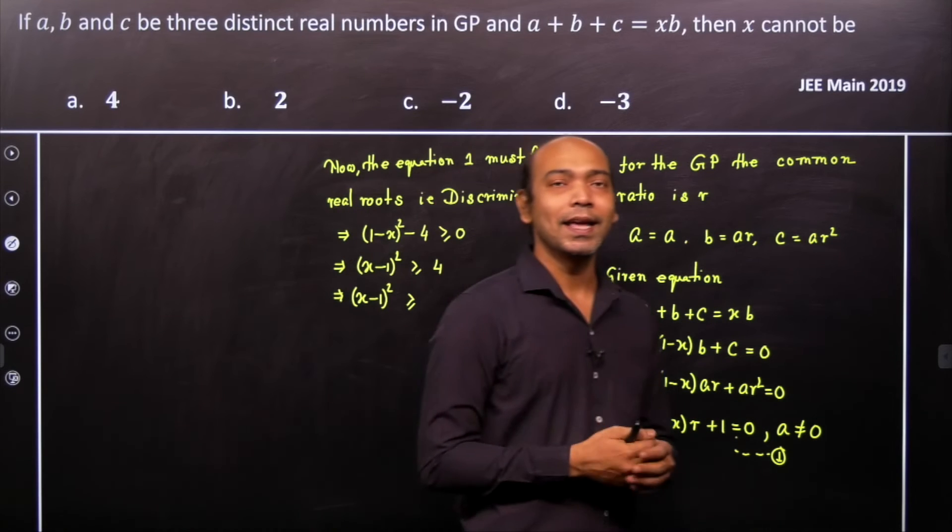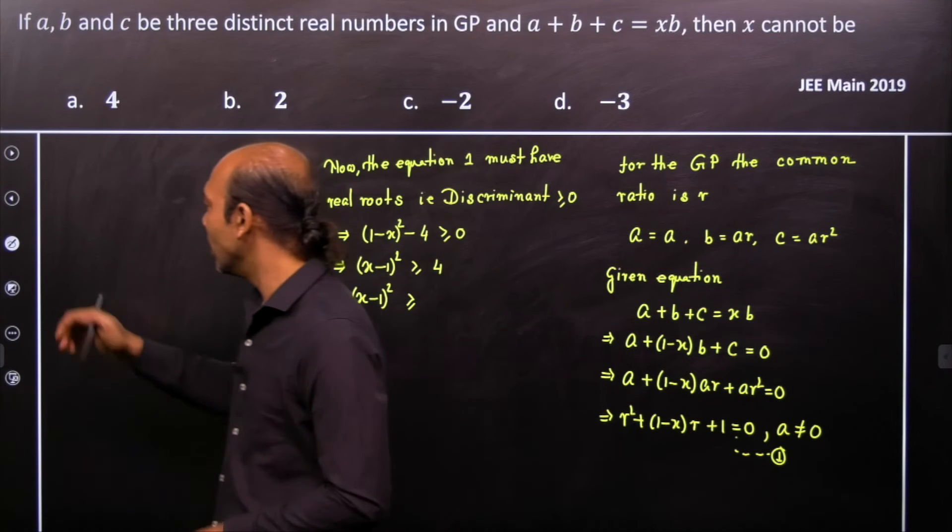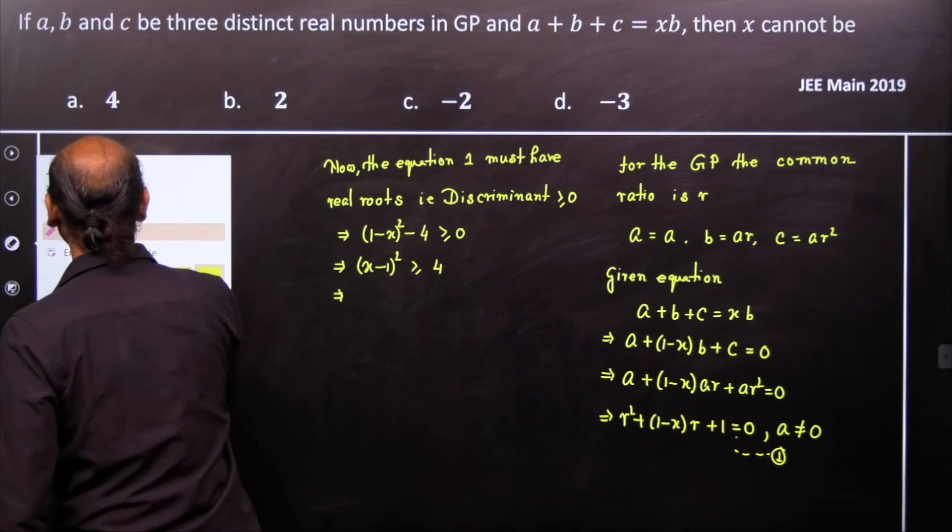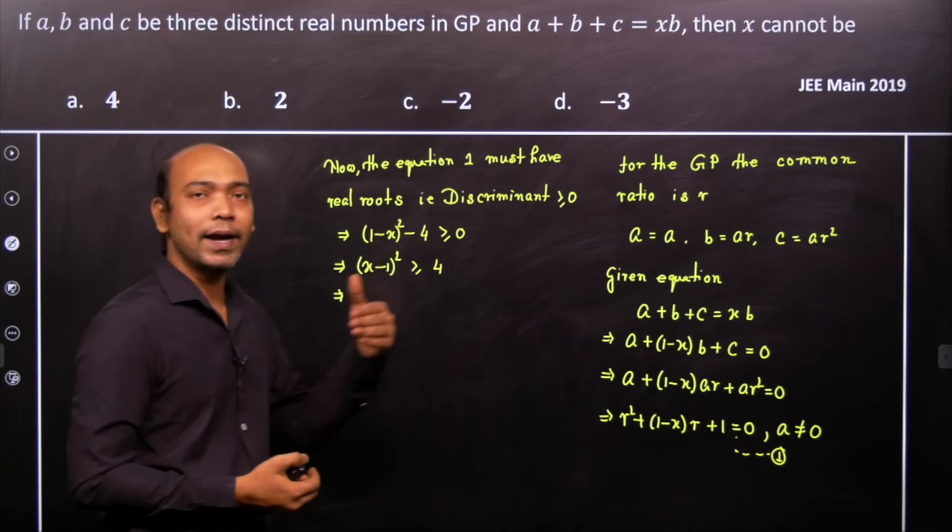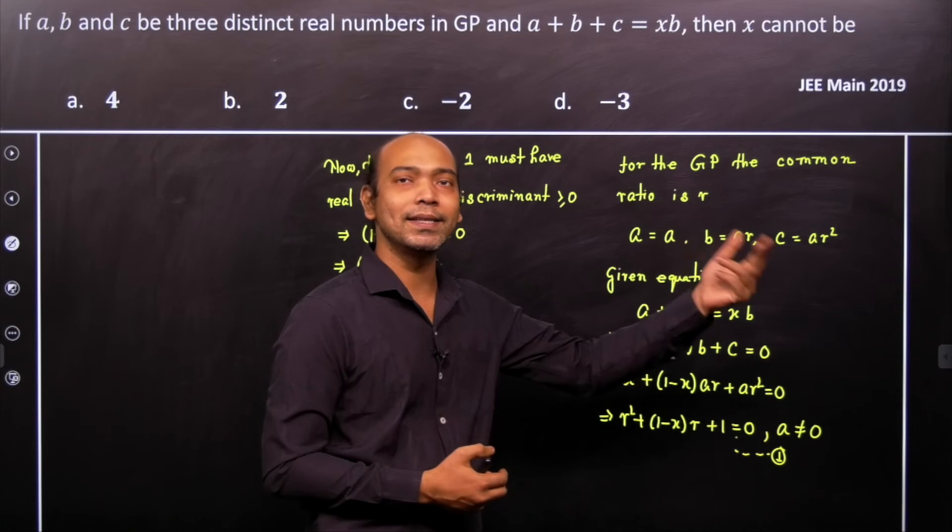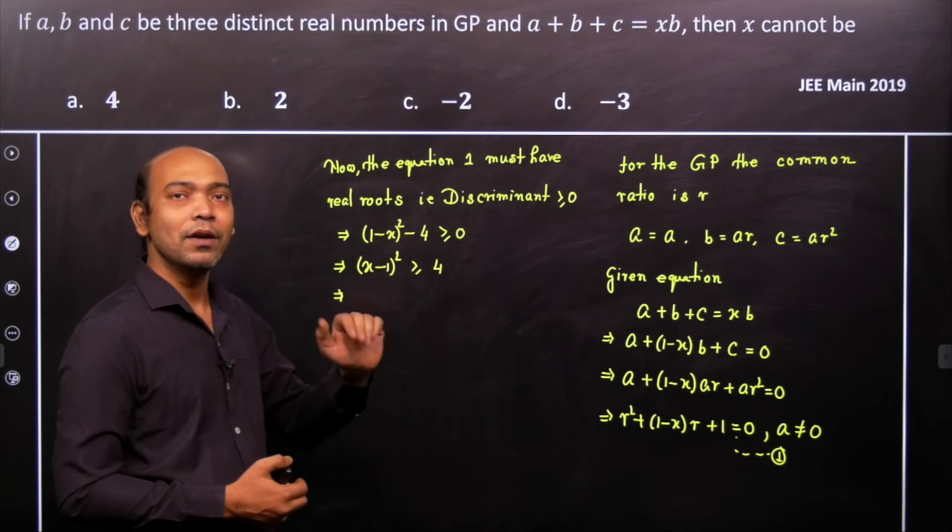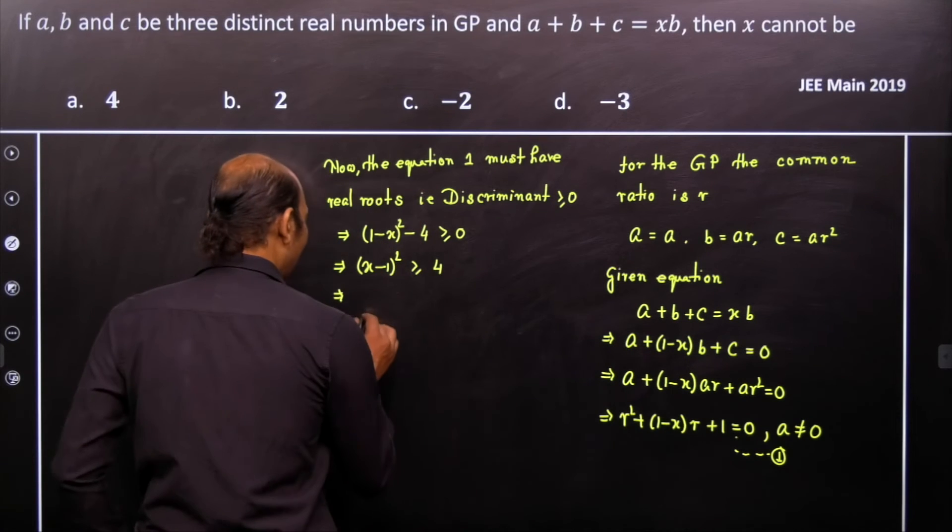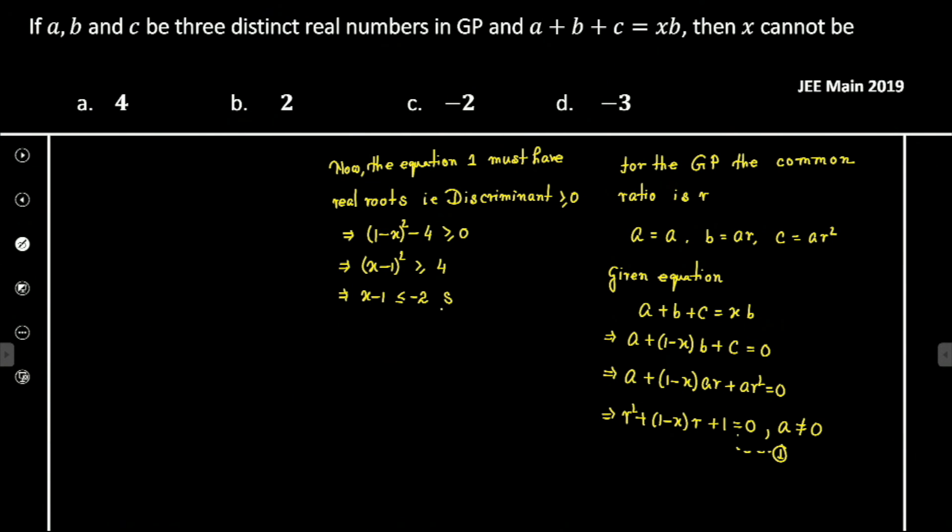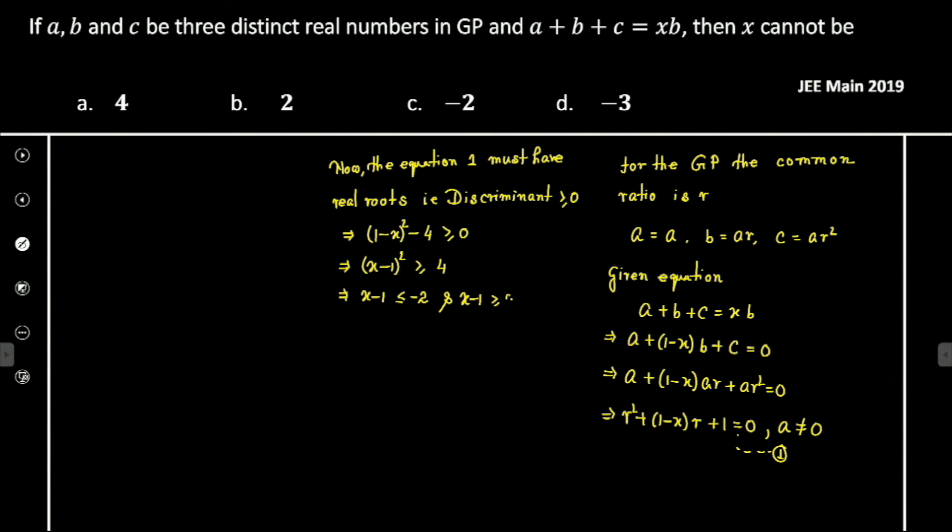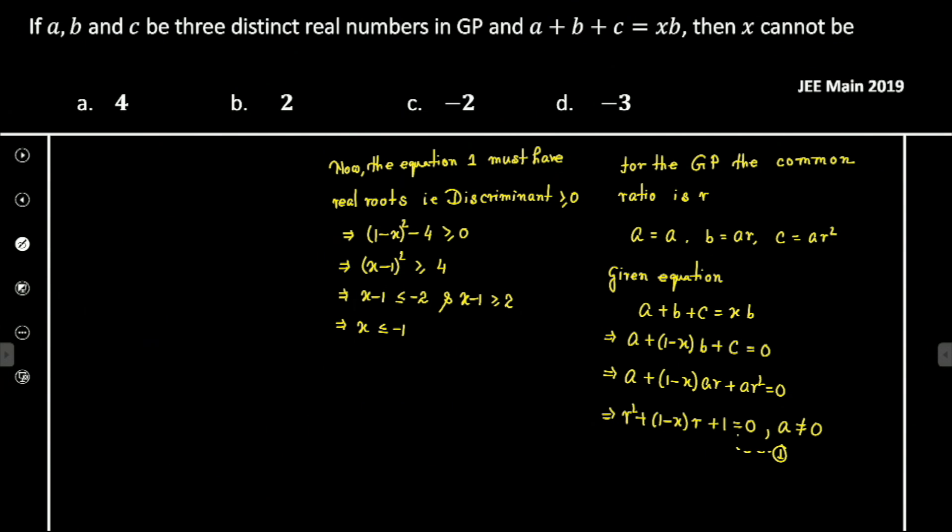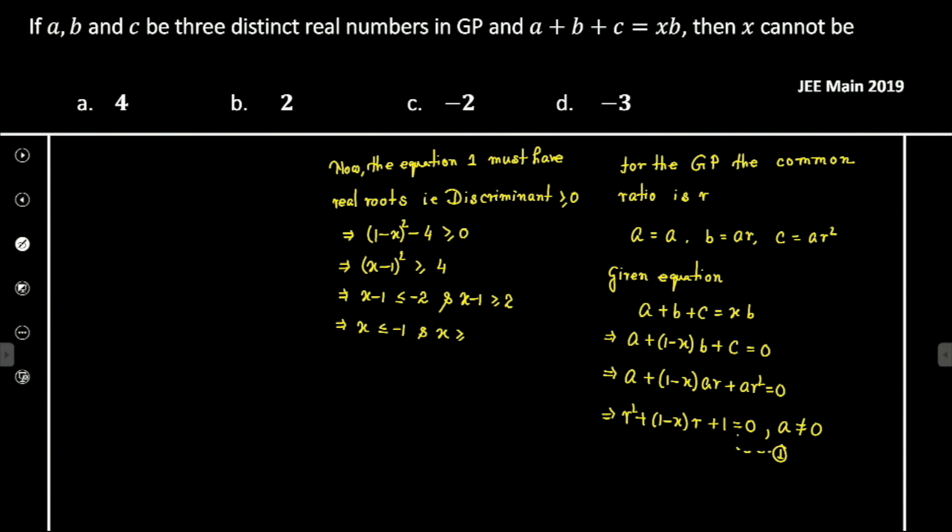Now let us observe that if (x - 1)² ≥ 4, then x - 1 will be either less than or equal to -2 or greater than or equal to 2. For example, if x - 1 = 3, then 3² = 9, which is satisfied. Similarly, (-5)² = 25. Therefore, x - 1 ≤ -2 or x - 1 ≥ 2. This implies x ≤ -1 or x ≥ 3.